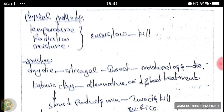First, we will see moisture control. Dry dye, or silica gel, is applied on the surface of the body of the insect. It will make the insect deprived of moisture, and the insect will die.